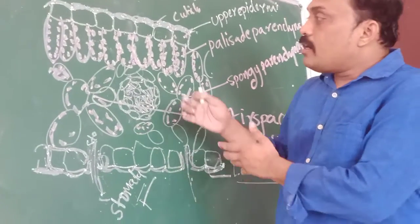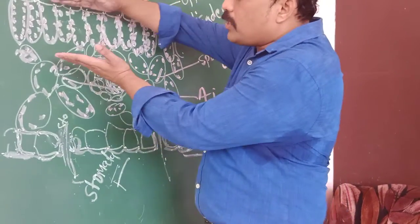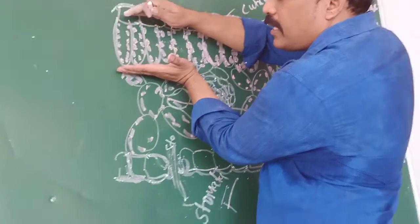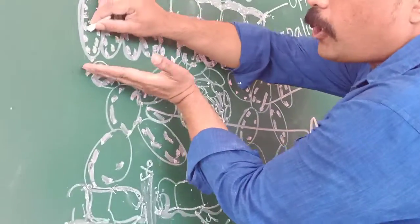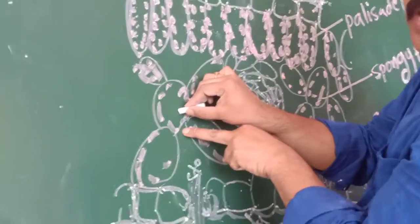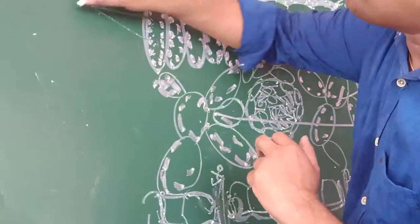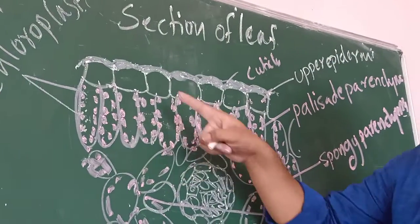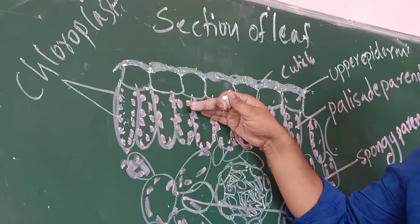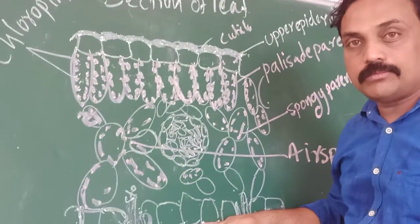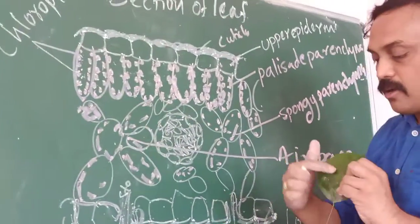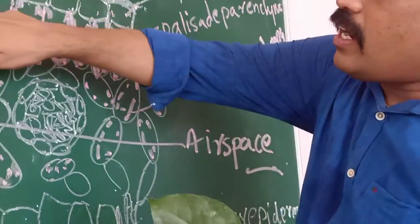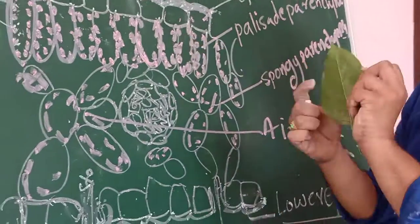Now, what is our main concept? The number of chloroplasts. In the upper region, if you observe the palisade parenchyma — these dot-like structures — the number of dot-like structures is more compared with spongy parenchyma. These dot-like structures we can call chloroplasts. The number of chloroplasts are more in the upper region, so the upper region is darker green in color compared with the lower region.